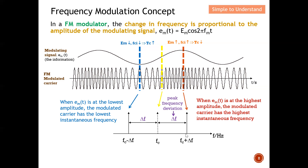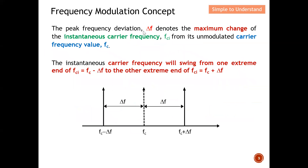To indicate the position of the modulating signal I use frequency: when amplitude is at the lowest point I show a very low frequency, and when it's at the highest I show the highest possible frequency. This gives you an idea of how frequency modulation is implemented. Regarding peak frequency deviation — this is the maximum change of the instantaneous carrier frequency from its unmodulated carrier frequency value, in both the plus and minus directions.